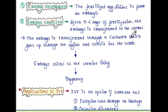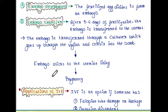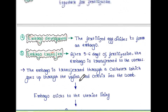The final step is embryo transfer. After five to six days of fertilization, the embryo is transferred to the uterus through a catheter, which goes up through the vagina and cervix into the womb. The embryo sticks to the uterine lining and pregnancy occurs.